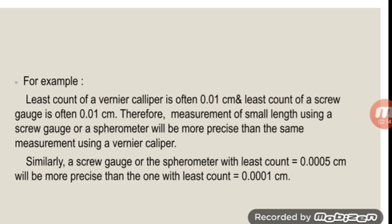The screw gauge and the spherometer can resolve more as compared to the vernier caliper. Similarly, a vernier caliper, screw gauge, or spherometer with a least count of 0.0005 cm will be more precise than the one with a least count of 0.001 cm. That is, greater the resolution of the instrument, the greater will be the precision.